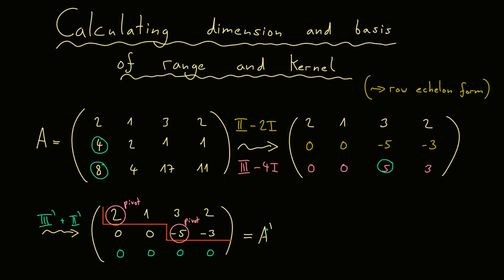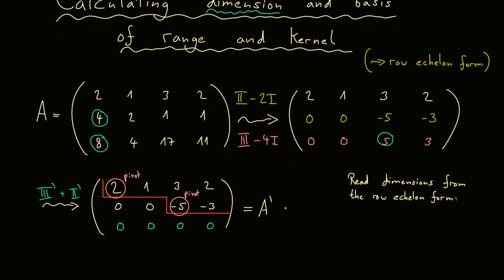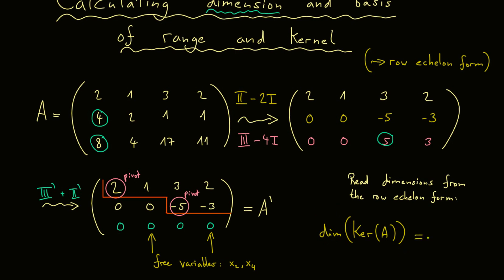An important thing to remember: the moment you reach the row echelon form, you immediately have the two dimensions we want to calculate. If you want to solve a system of linear equations, you would put all the free variables on the right — and this is also how you get to the kernel of a matrix. The free variables correspond to columns where there is no pivot. In this example, you find one free variable in one column and one in another, meaning x2 and x4 are the free variables. The number of free variables gives you exactly the dimension of the kernel. In our example, the dimension is 2.